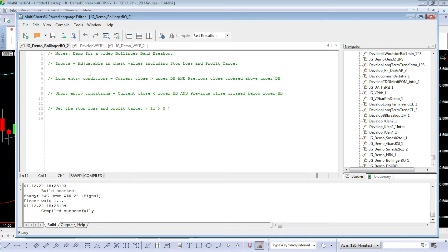Here we are in the power language editor. This is where we write our code before applying it to a chart in multi-charts. I've already written out some notes here in green. Anything which we start with double forward slash turns green automatically and anything that's green is not recognized by the computer when it comes to doing the computing. They are literally just for our notes when we're writing out the code. The first thing we're going to do is put in our inputs.